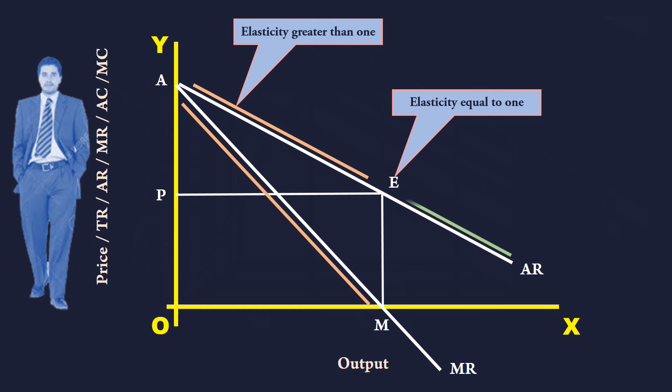Segment that lies to the right of E. In this segment, elasticity of demand is less than one. This is the least preferred segment. So to say, monopolist doesn't want to operate in this segment. Because, corresponding to this segment, marginal revenue is negative.